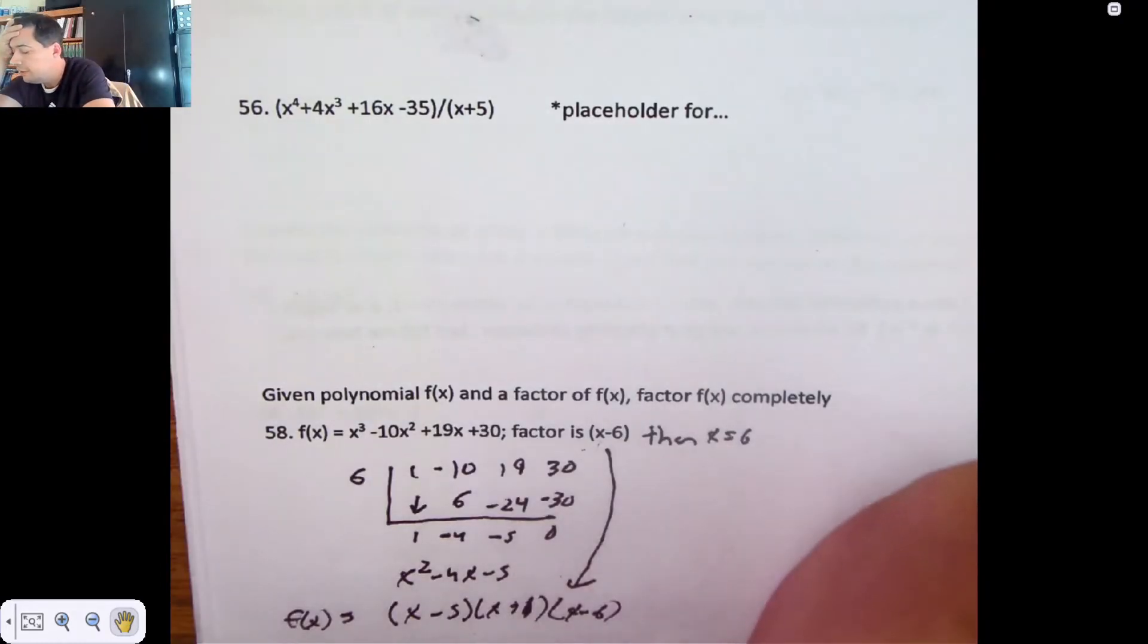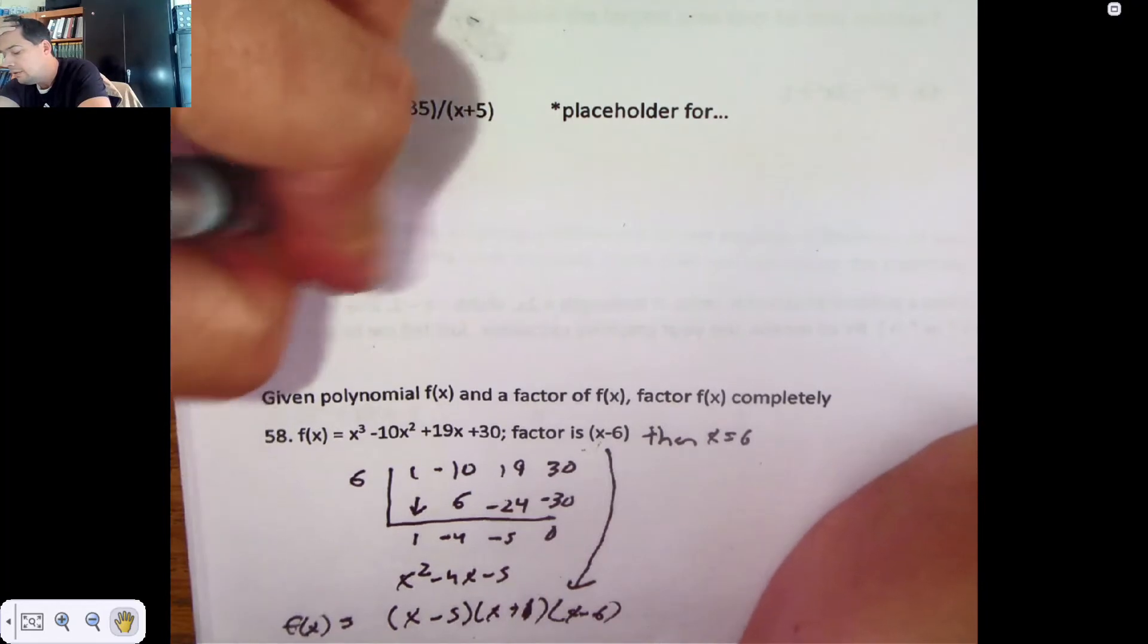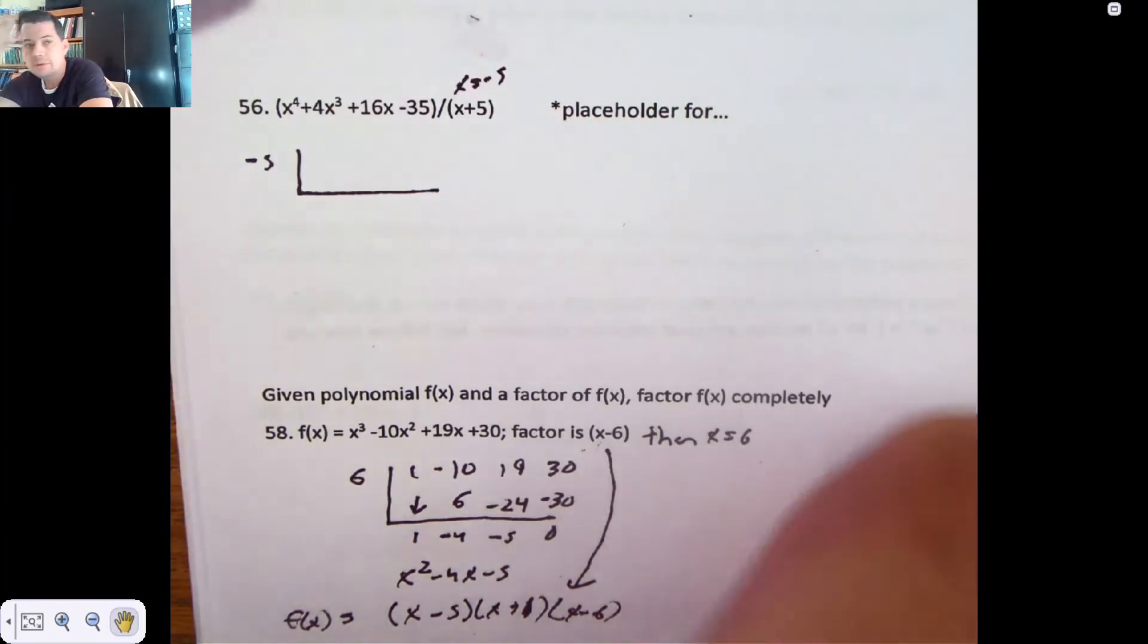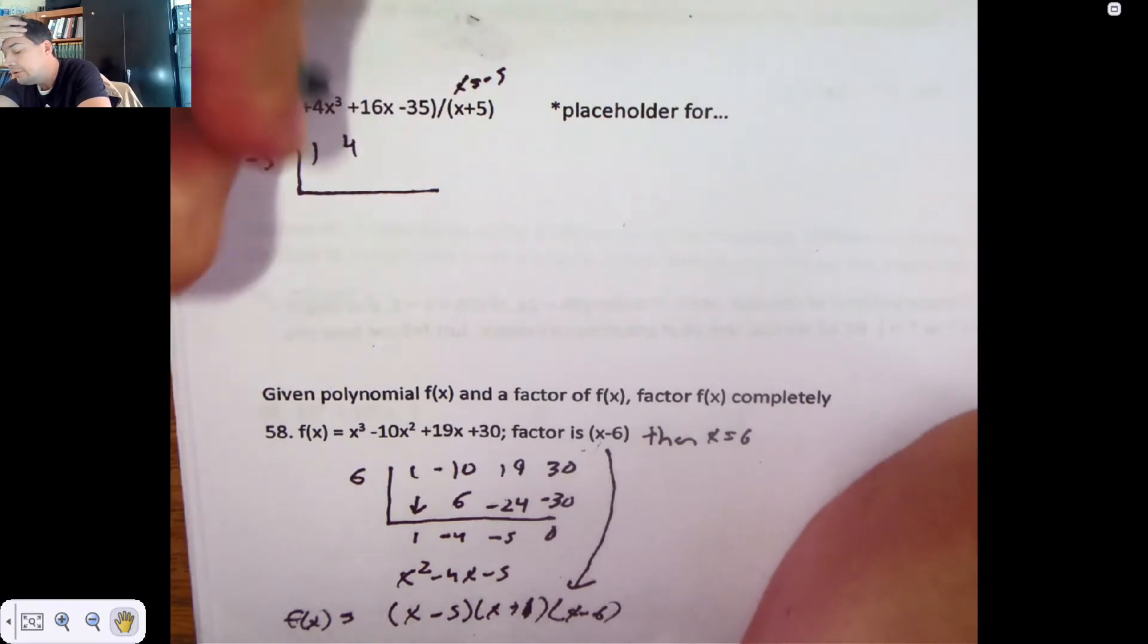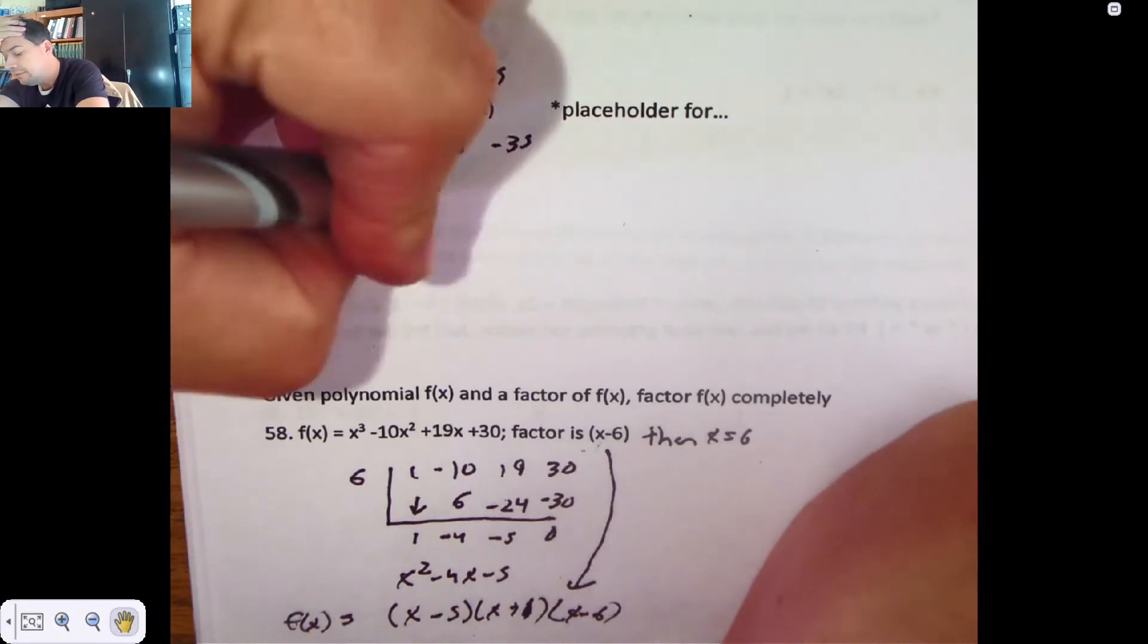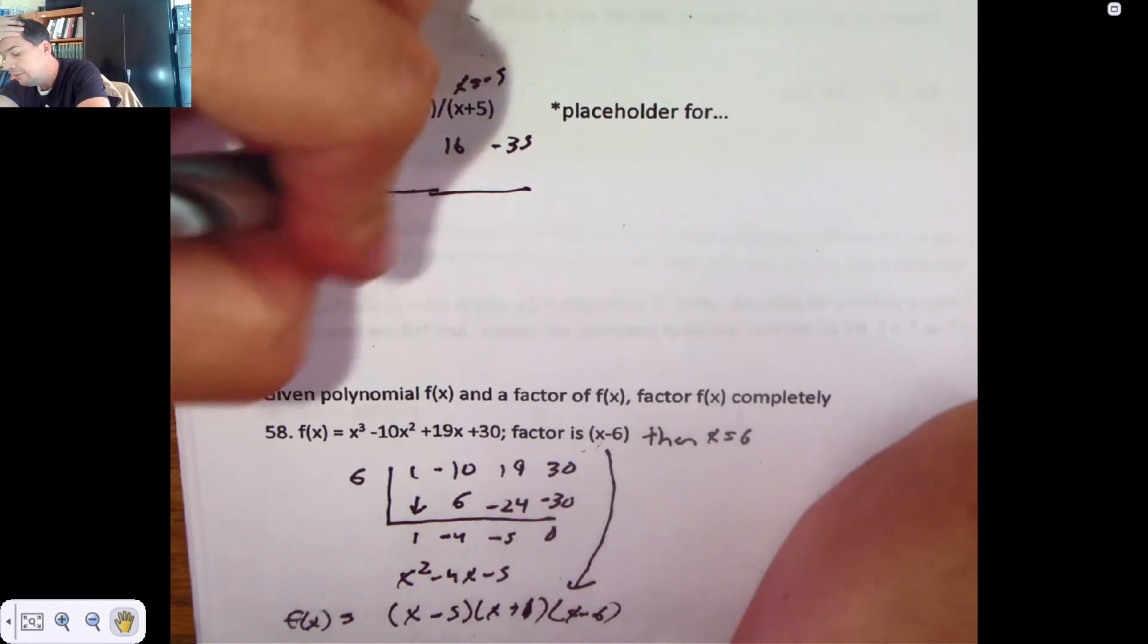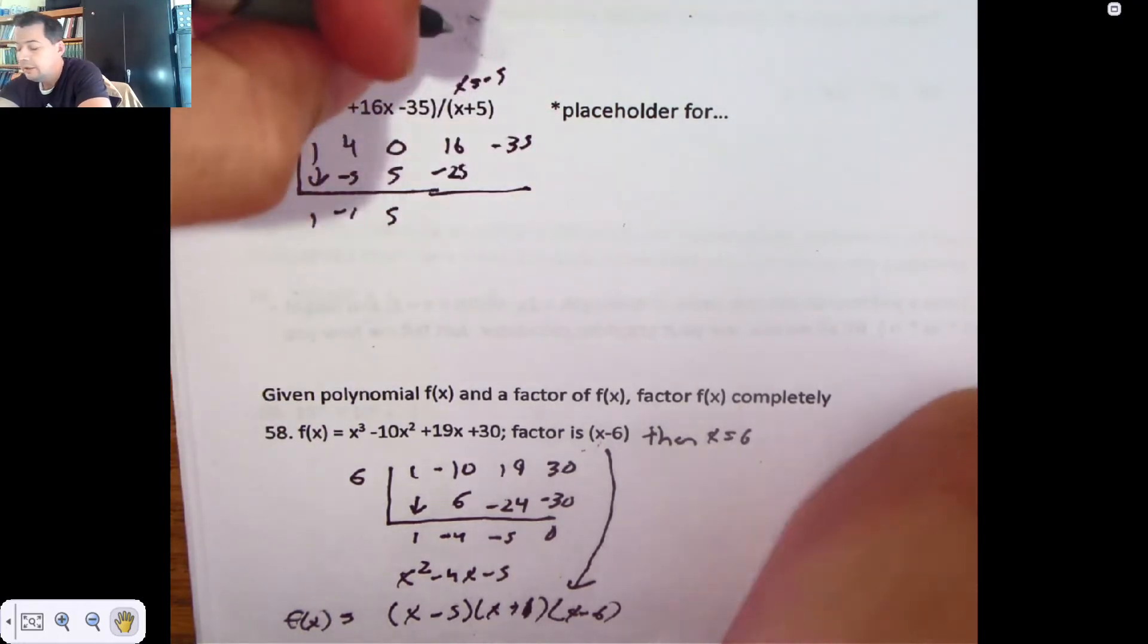This one's also talking about the need of a placeholder. It's got a little hint there. We're dividing by negative 5 because x is negative 5. If we jump equality, we think about that being or possibly being a factor. It might be, it might not. There's no x squareds, so I need a 0 right there. 16 and negative 35. We drop. We multiply and add. We multiply and add. We multiply and add.